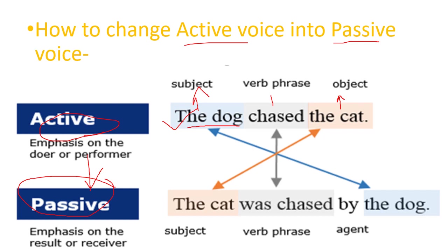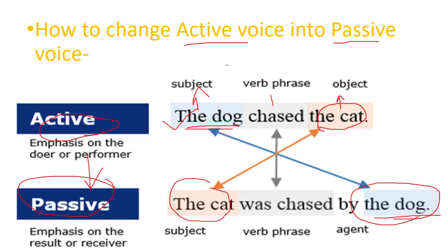For 'The dog chased the cat' in active voice, when changing to passive voice: the subject of active voice will become the object of passive voice, and the object of active voice will become the subject of passive voice. This is the first rule to keep in mind. There will also be a change in verbs according to the rules.